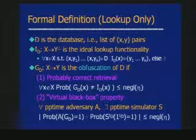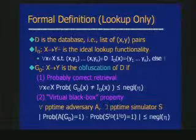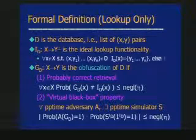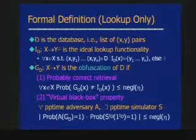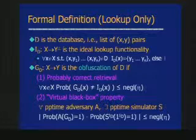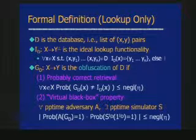Question: Should there be an A in the second probability? Yes, that's true. The simulator will, as always, run the adversary as a black box and use its output. You're right — it's sort of implicit here, but the simulator depends on A. It's not a universal simulator, of course.